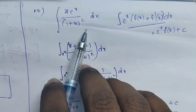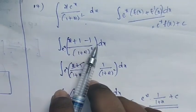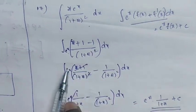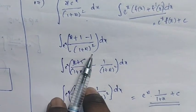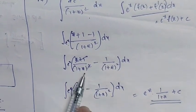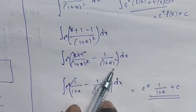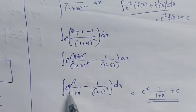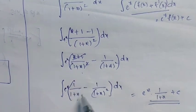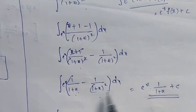For x·e^x / (1 + x)², in the numerator I am adding and subtracting 1, so x becomes x + 1 − 1. It becomes e^x · [(x + 1 − 1) / (1 + x)²]. Splitting: [(x + 1)/(1 + x)²] − [1/(1 + x)²], which gives e^x · [1/(1 + x) − 1/(1 + x)²] dx.